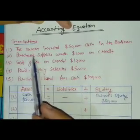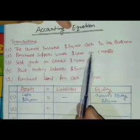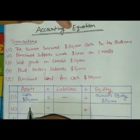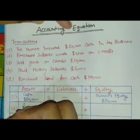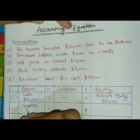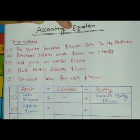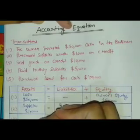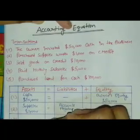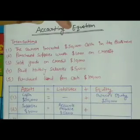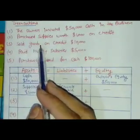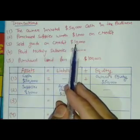Next, purchased supplies worth one thousand dollars on credit. Supplies is an asset, therefore assets will be increased by one thousand dollars. It is purchased on credit, therefore liabilities will be increased by one thousand dollars due to accounts payable. There is no effect on owner's equity.